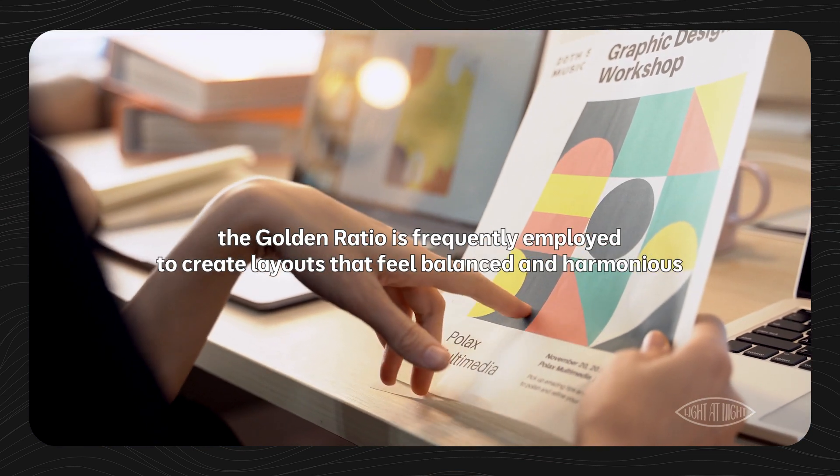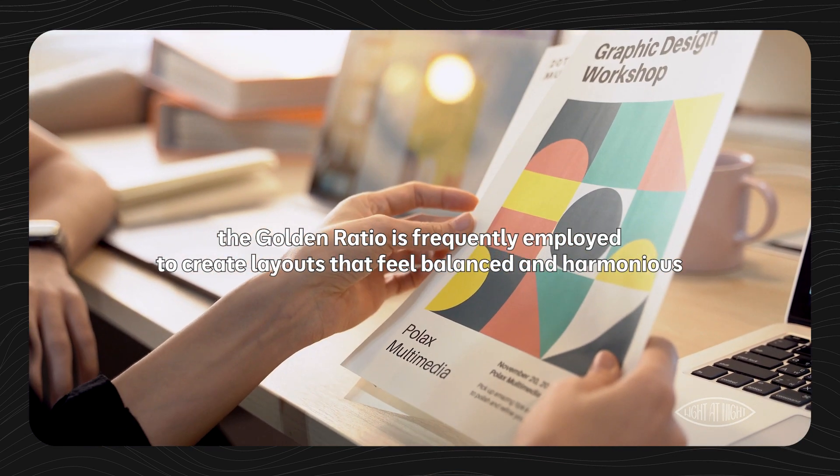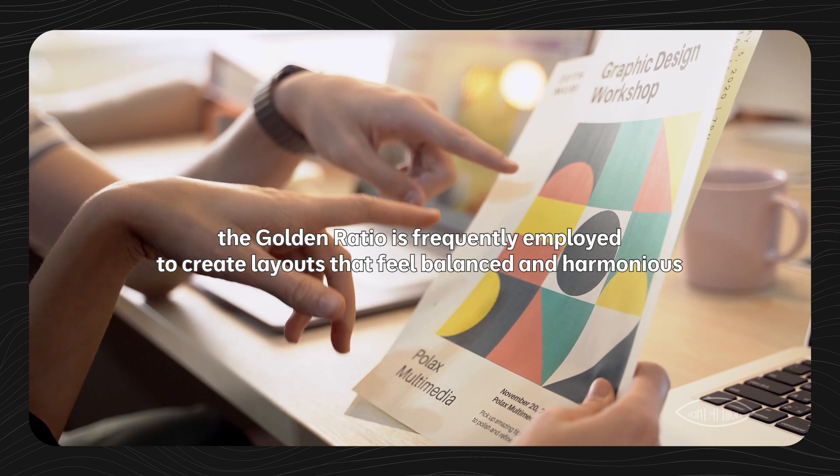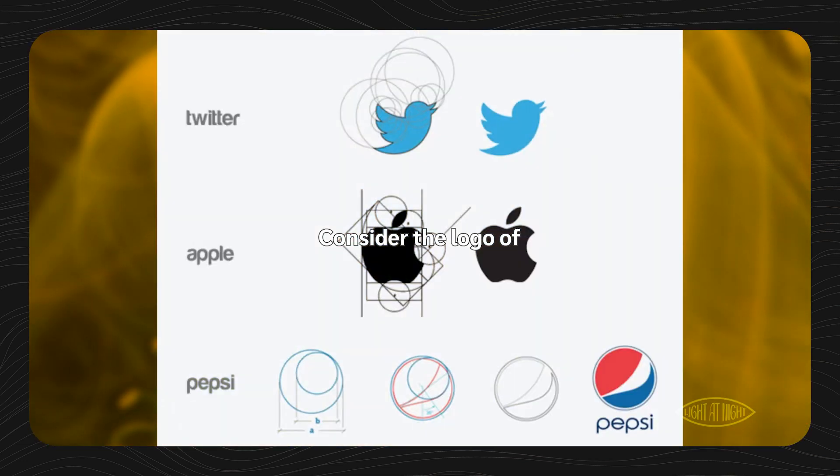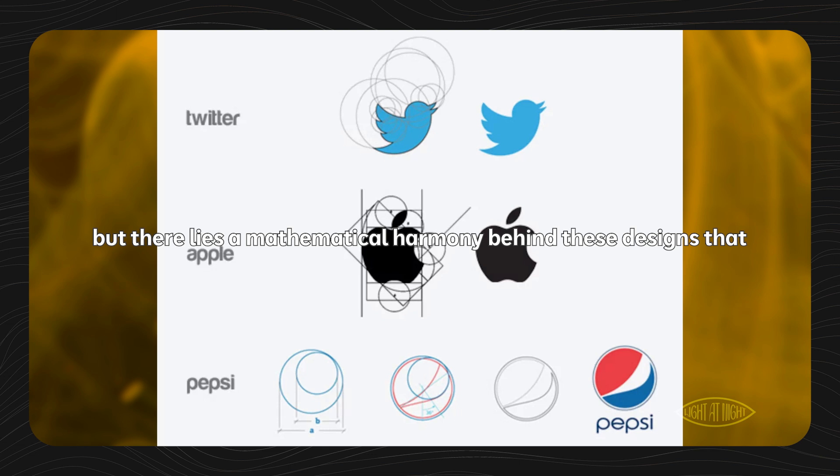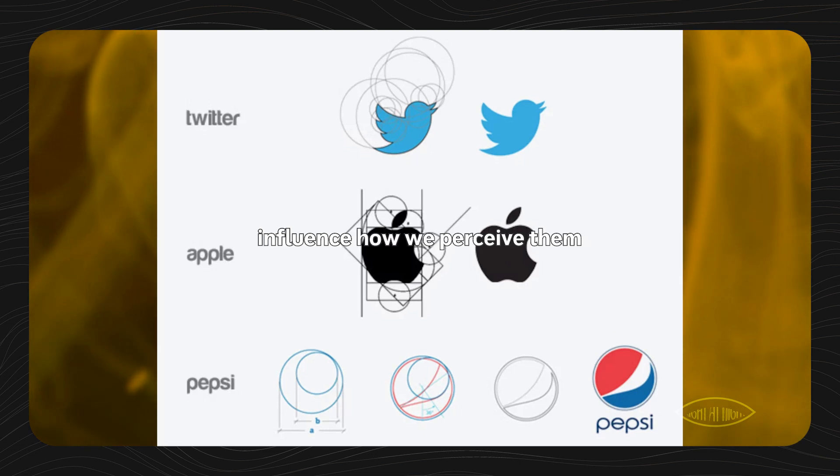the golden ratio is frequently employed to create layouts that feel balanced and harmonious. Consider the logo of Apple, Twitter, or even Pepsi. Subtle, but there lies a mathematical harmony behind these designs that influence how we perceive them.